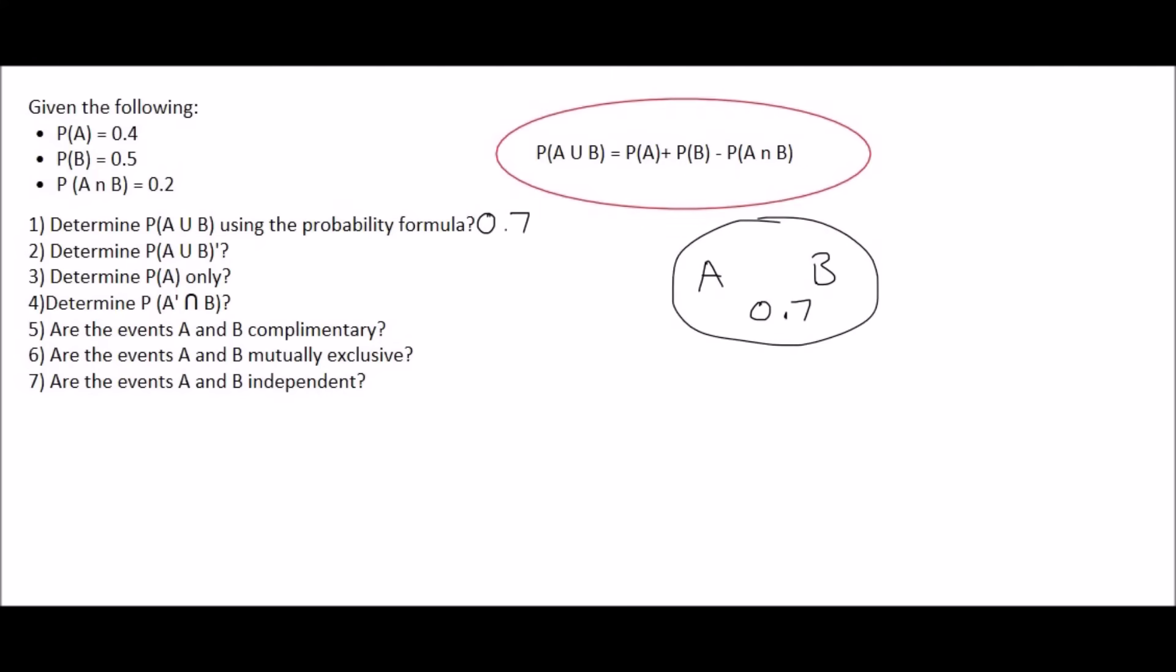The next question says, what is the probability of A or B? But then it's got this little line over here. What that line means is it's the mathematical way to say not. So it's saying, what is the probability that it is not A or B? Well, the probability that it is A or B is 0.7. And so the probability that it's not A or B would be 1 minus 0.7, and that would give us 0.3.